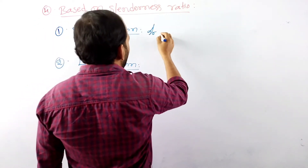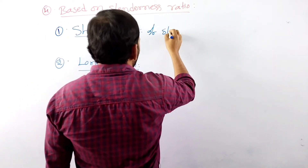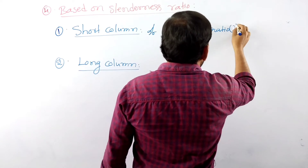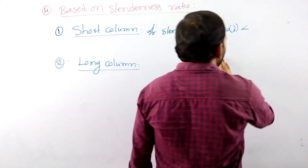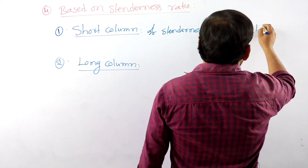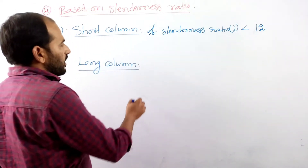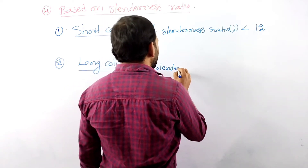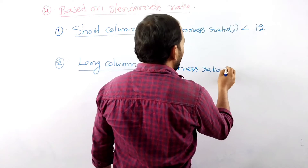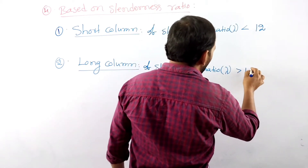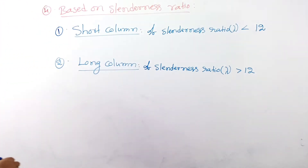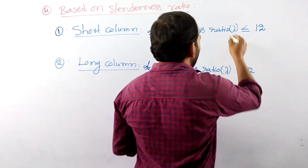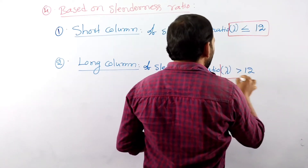If the slenderness ratio is less than or equal to 12, it is called a short column. If the slenderness ratio is more than 12, it is called a long column.